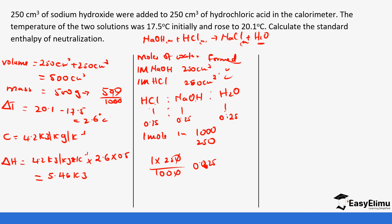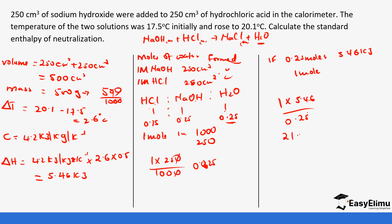Always ensure you get the accurate moles of water, as sometimes there may be excess acid or excess base. If 0.25 moles of water produces 5.46 kJ of heat, then for 1 mole it is: 1 × 5.46 ÷ 0.25 = 21.84 kilojoules per mole. Remember, your final answer must be negative since neutralization is exothermic, so the molar enthalpy of neutralization = −21.84 kJ/mol.